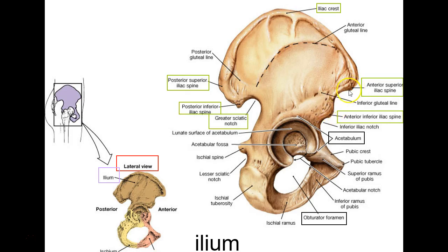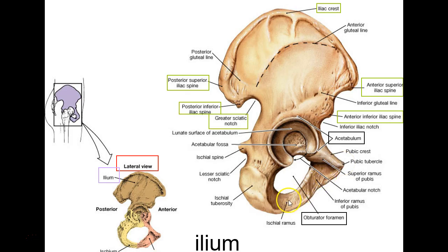This is the ischium. The tuberosity back here is called the ischial tuberosity. There's a spine back here — since it's only one, you just call it the ischial spine. The pubic crest is this ridge here, and the pubic tubercle is the bump on the front.